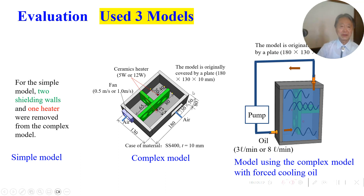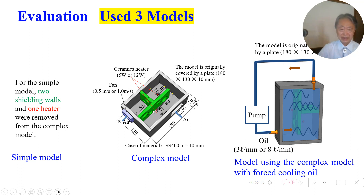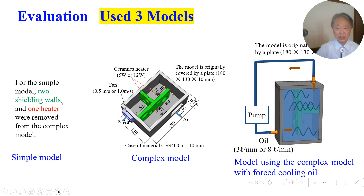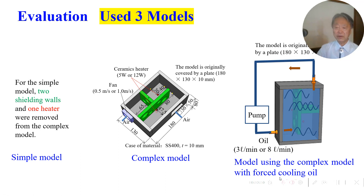For evaluation, I used three models. This is the complex model — two green walls, two heaters. The simple model has two shielding walls and one heater; some components were removed. The final model uses the complex model with forced cooling oil at the outlet.